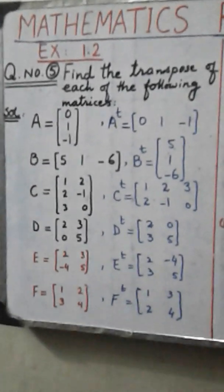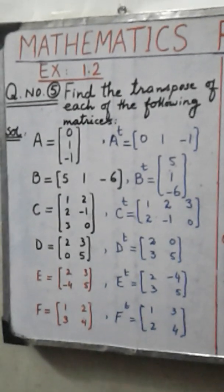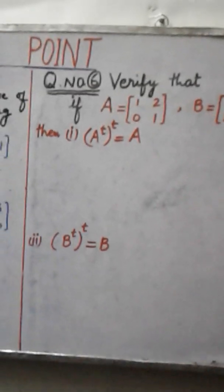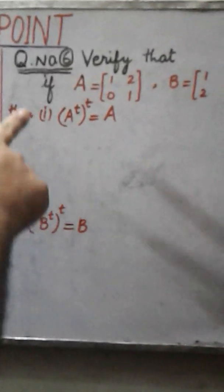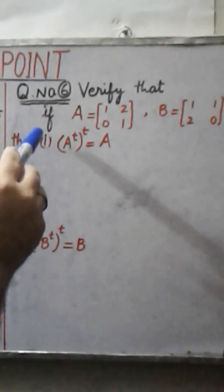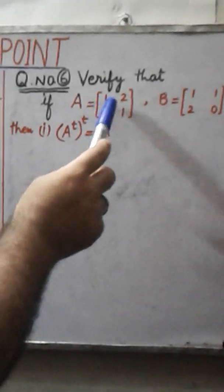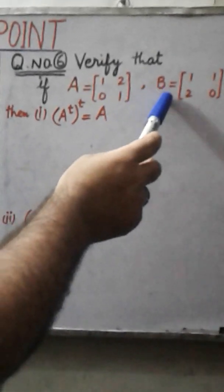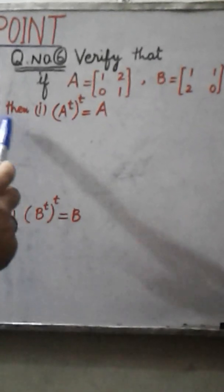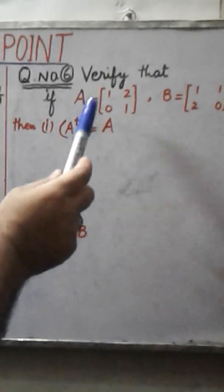We have solved question number 5, where we found the transpose of each of the following matrices. Now in question number 6, we verify that: given matrix A equal to 1, 2, 0, 1 and matrix B equal to 1, 1, 2, 0, we have to verify that A transpose transpose is equal to A.